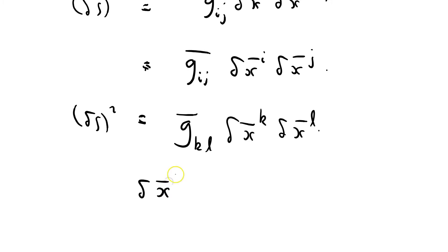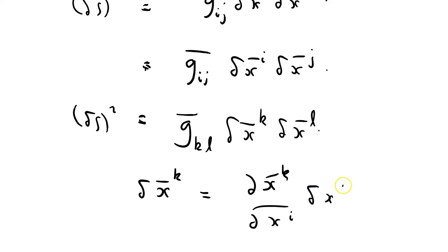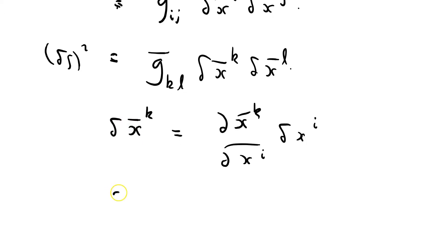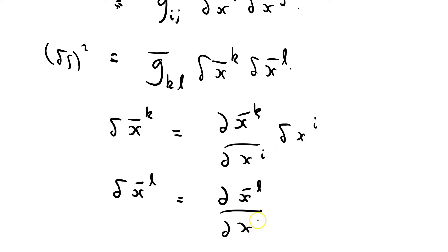δx̄ᵏ is just equal to (∂x̄ᵏ/∂xⁱ) δxⁱ, summed over i. And by pure analogy, δx̄ˡ equals (∂x̄ˡ/∂xʲ) δxʲ, summed over j. That's just the total derivative law.